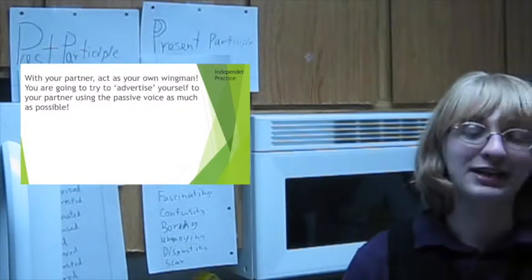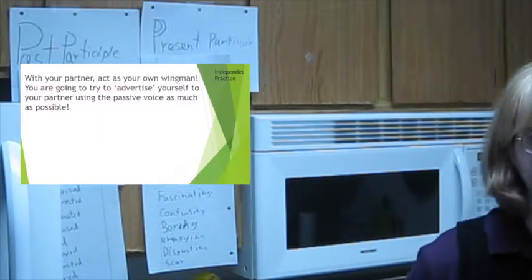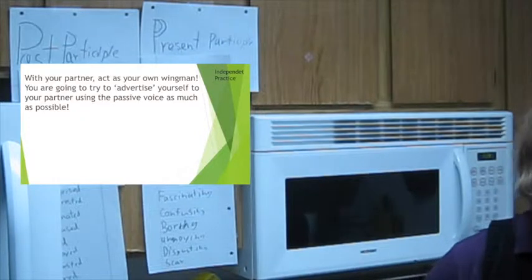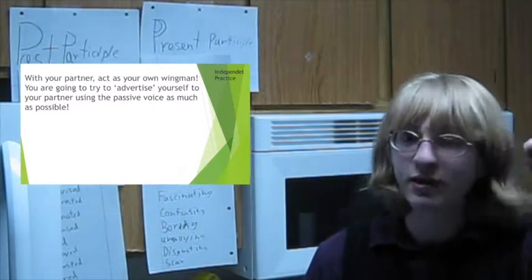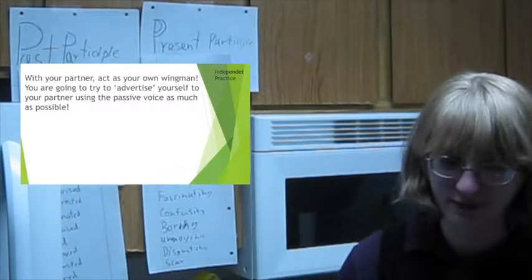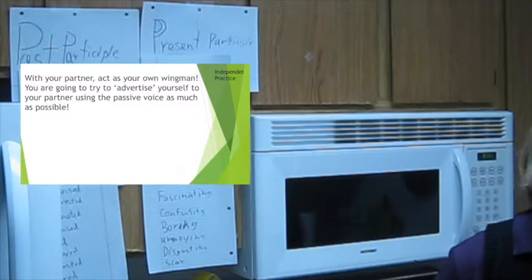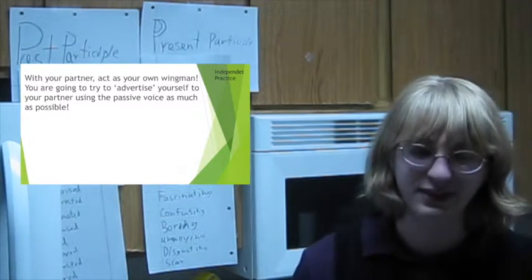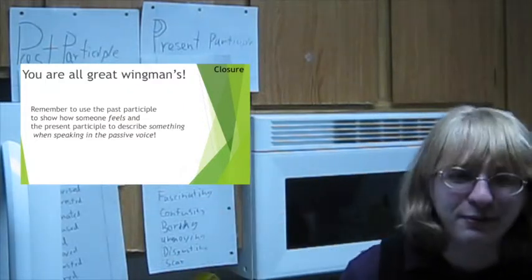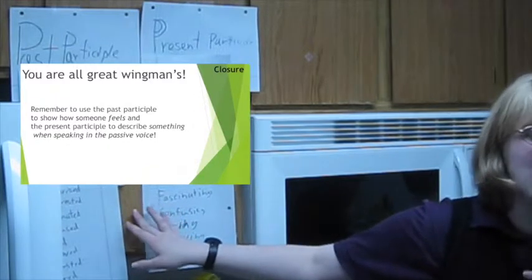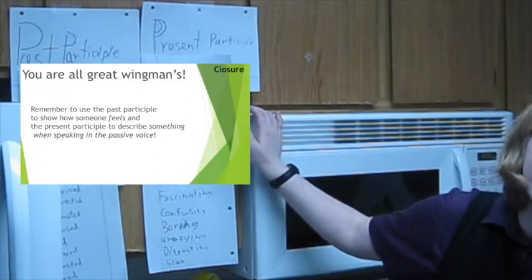This time, you're going to act as your own wingman. You are going to try to get a date with your partner. You two are both trying to hook up together for this activity. You're going to think of things on top of your head and try using the passive voice to convince your partner to start dating you. Yeah, it's pretty similar to our last activity, but you're not given any sheet to look off of. You're all great wingmans. Remember to use the past participle to show how someone feels and the present participle to describe something when speaking in the passive voice.